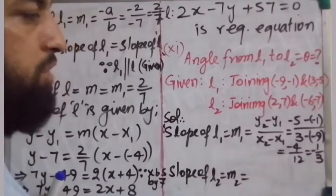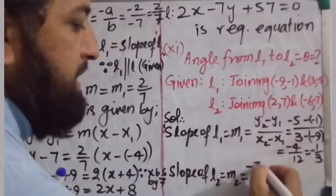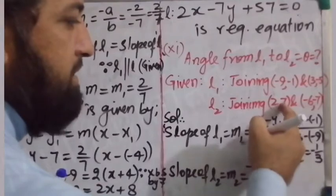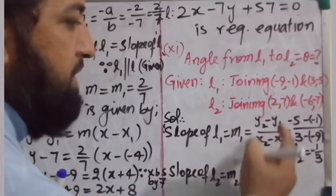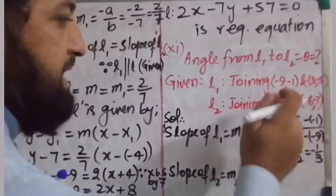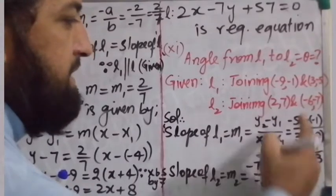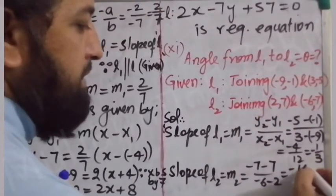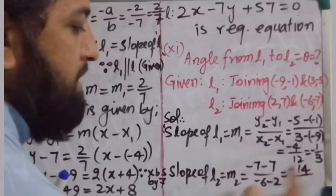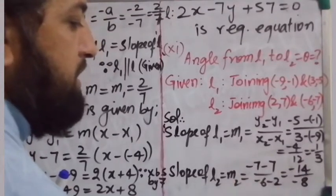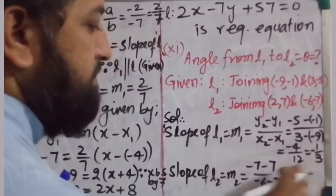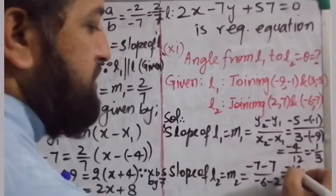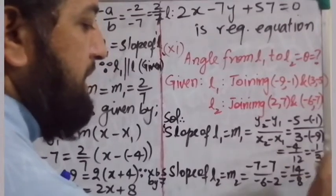Slope of L2 is M2. Using the same formula: y2 minus y1 is -7 minus 7 = -14, and x2 minus x1 is -6 minus x1. This gives -14 / -8, which simplifies to 7/4. So M2 = 7/4.